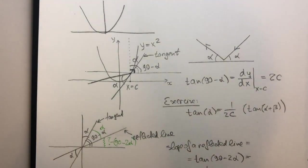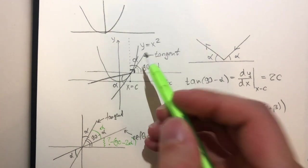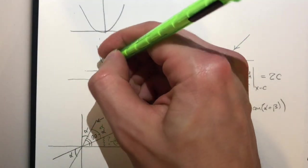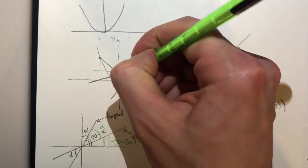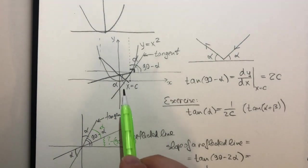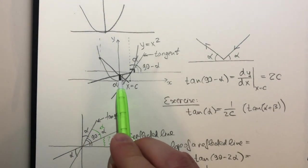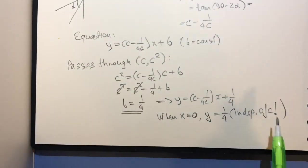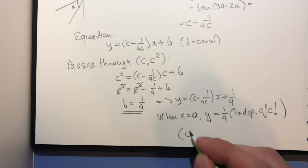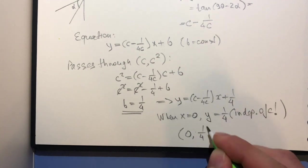So that precisely means that all these reflected lines, let's draw another one here, will cross at one point. For our specific parabola, this point ends up being 0, a quarter.